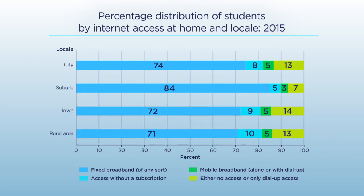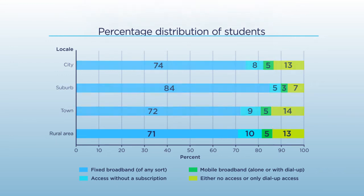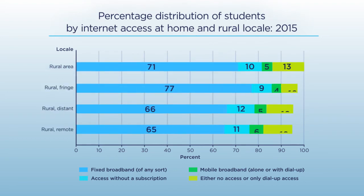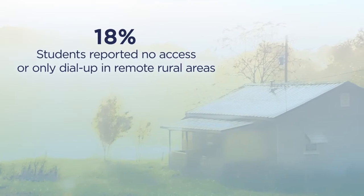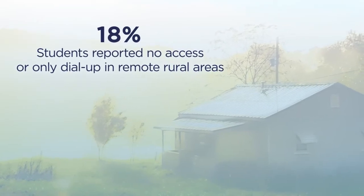A higher percentage of students in towns, rural areas, and cities reported having no internet access or only dial-up access at home compared to students in the suburbs. A higher percentage of students living in the most remote rural areas had no internet access or only dial-up. In these remote rural areas, 18% of students reported no access or only dial-up access.